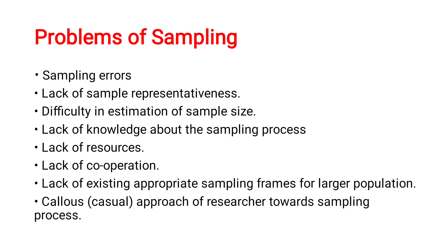What are the problems of sampling? Sampling errors — when you are taking samples there may be chances for error, as discussed earlier. Lack of sample representativeness. Difficulty in estimation of sample size. Lack of knowledge about the sampling process. Lack of resources. Lack of cooperation. Lack of existing appropriate sampling frames for larger populations. And careless or casual approach of the researcher towards the sampling process.